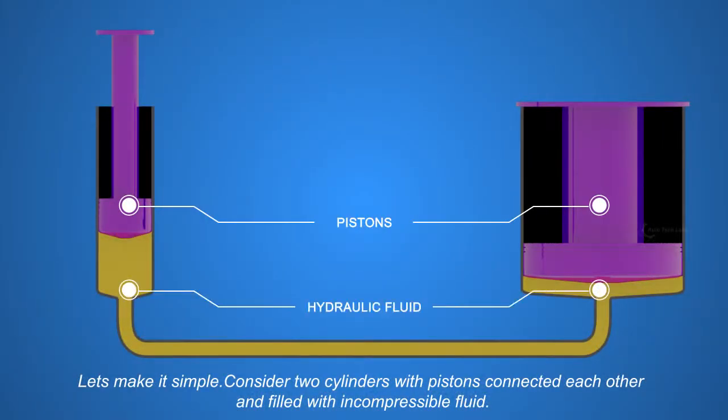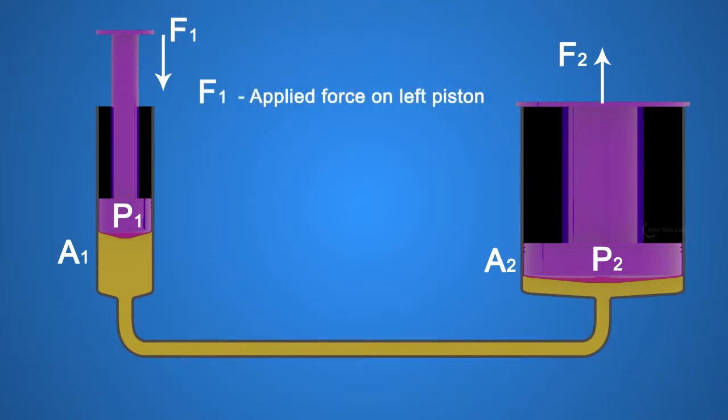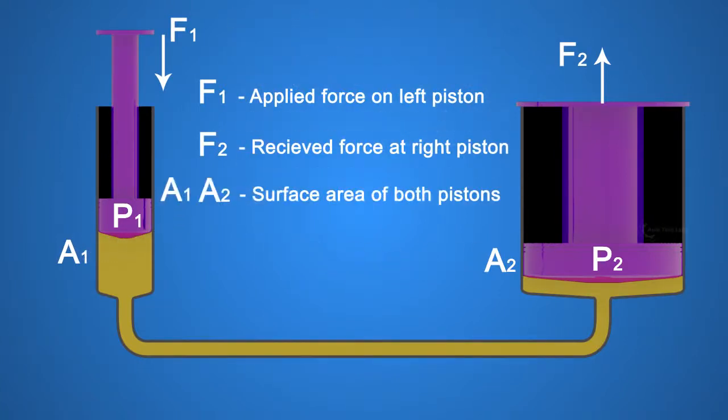Let's make it simple. Consider two cylinders with pistons connected to each other and filled with incompressible fluid. The mathematical relation is as follows: F1 is the applied force on left piston. F2 is the received force at right piston. A1 and A2 are surface areas of both pistons.